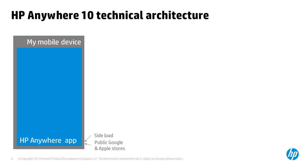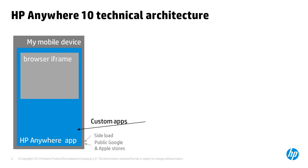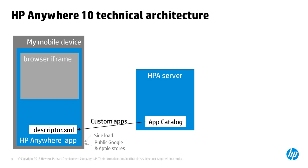HB Anywhere is called a container or hybrid app because when we click on its icon, the app opens a browser iframe. Resources for each custom app are listed in its descriptor file, loaded from the app catalog managed by an HB Anywhere server.